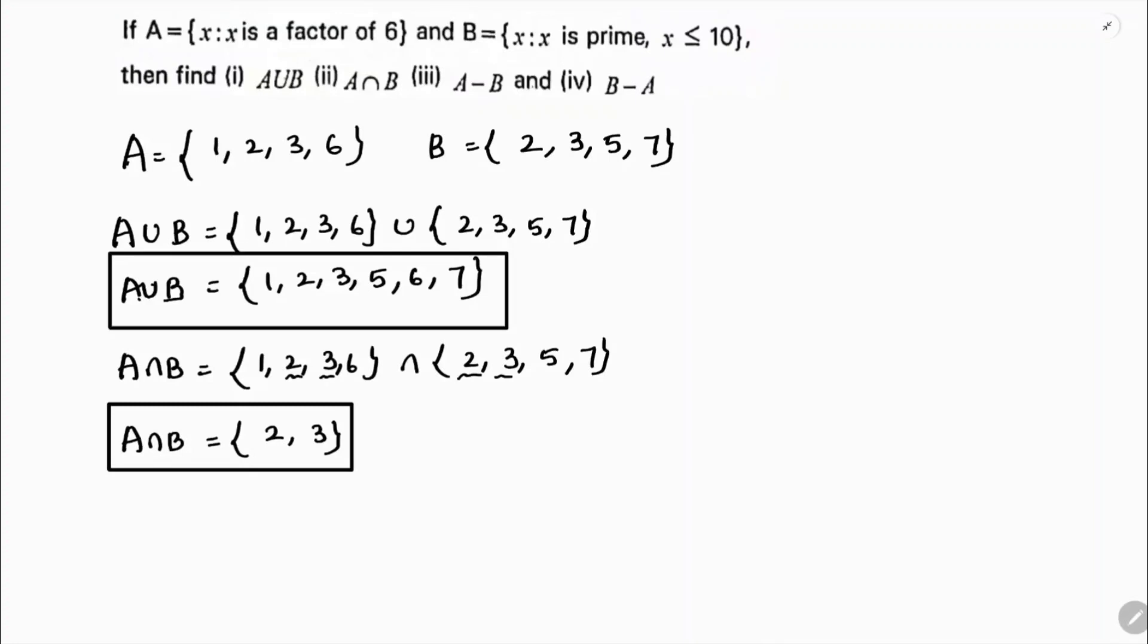Now we need to write A minus B and B minus A. So first I'll calculate A minus B. A we have {1, 2, 3, 6} minus B is {2, 3, 5, 7}. So the common elements you cancel, and whatever is left on the left side, here we are left with 1 comma 6. That is A minus B, because from A we are taking out complete B, so whatever is left here you write that only: 1 and 6.